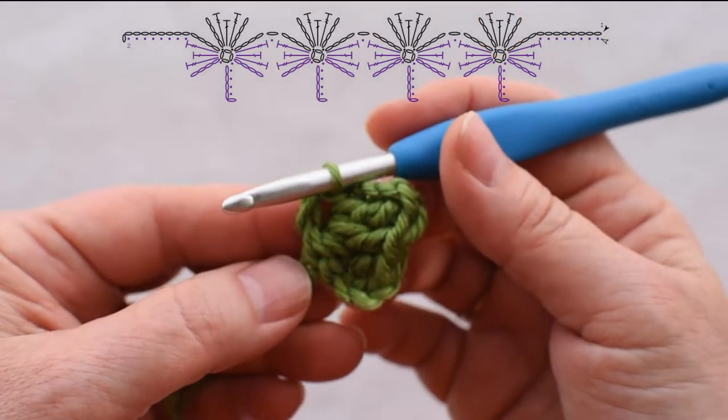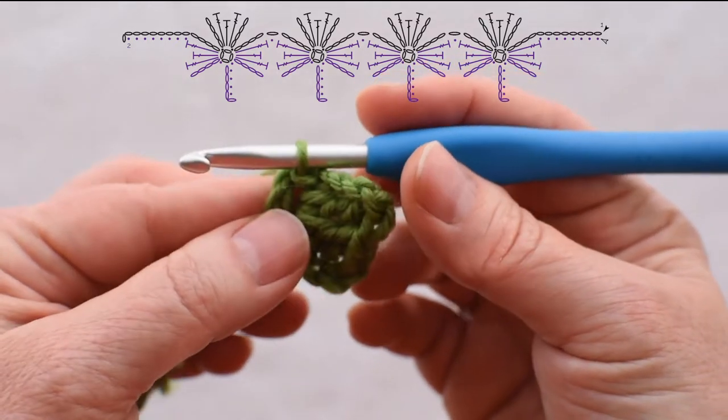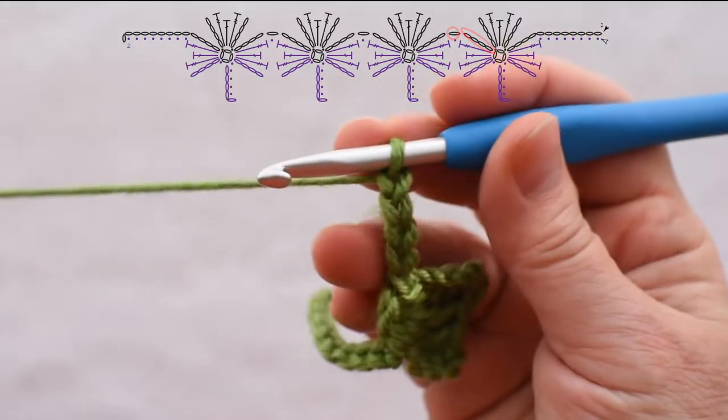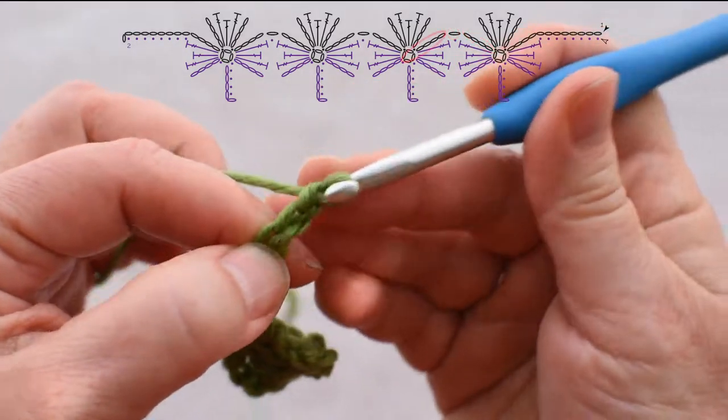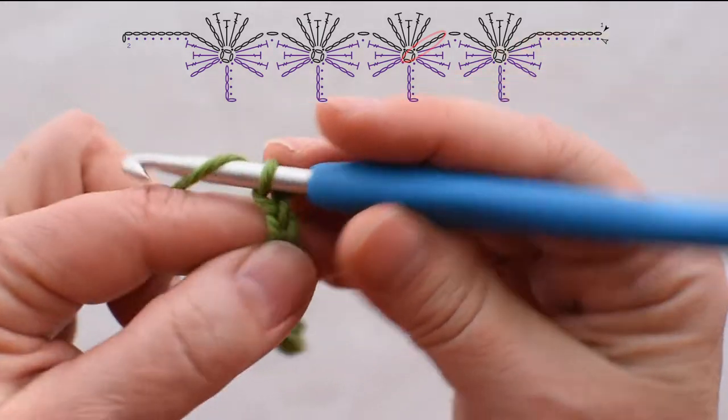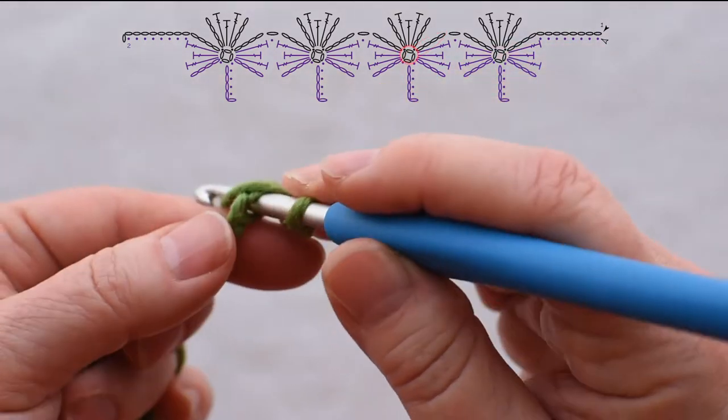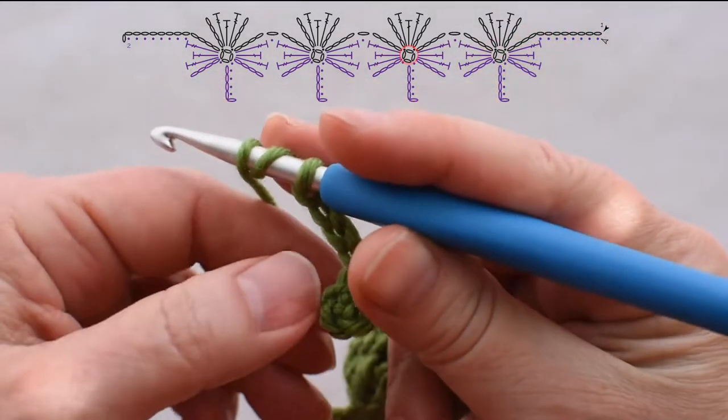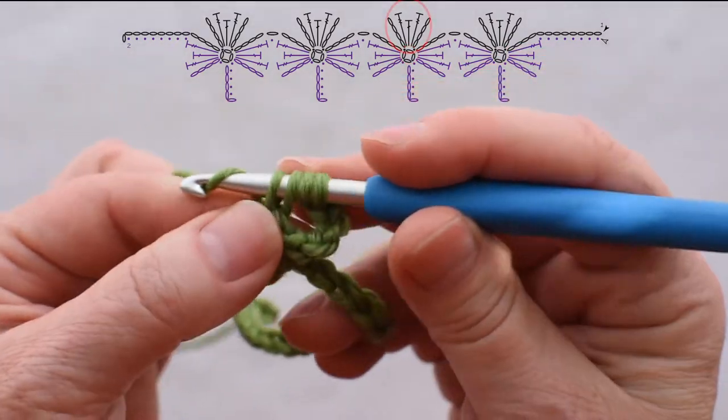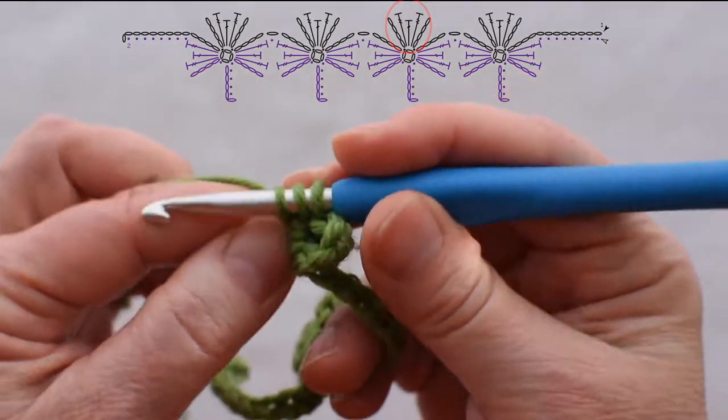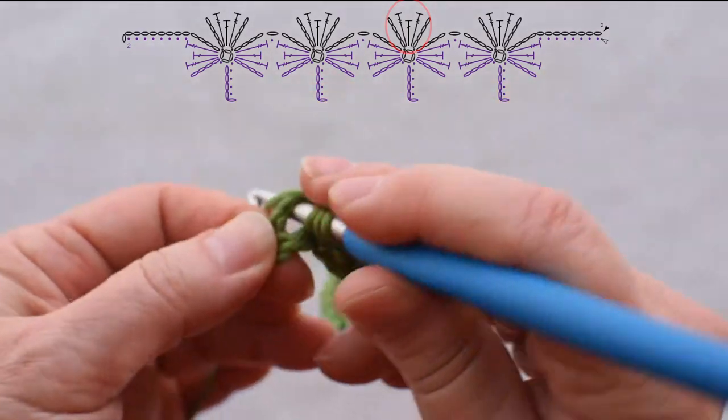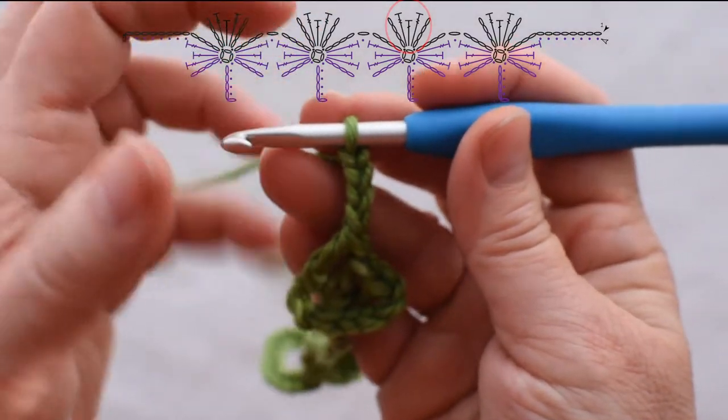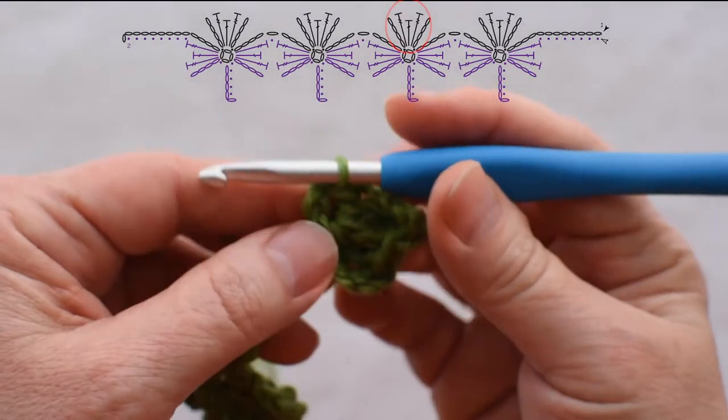That has created my first shamrock leaf and it's time for me to start working on the next leaf but also join and begin the next shamrock. I'll chain four and then one more chain that's going to go between the shamrocks, and then chain eight. Slip stitch in the fourth chain from my hook and I'm going to make that a crossover slip stitch and do another leaf. So I'm working into that ring. Slip stitch into the back bump of the second chain from the hook and there's my second leaf.